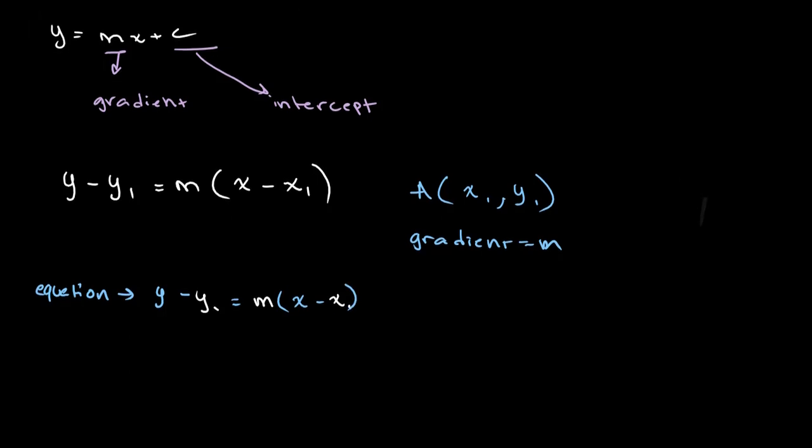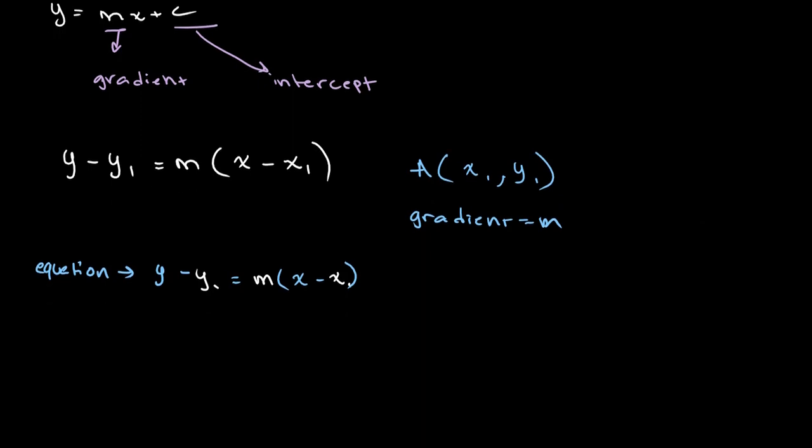So let's say that we have a point that passes through the point (6, 5) and it has a gradient of 3. If we want to find the equation of our graph, then we simply plug it into this equation.